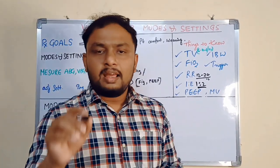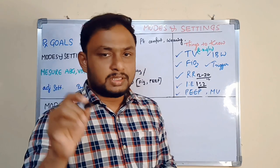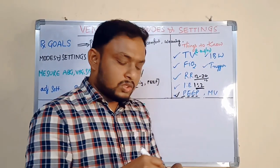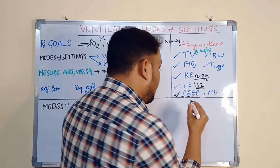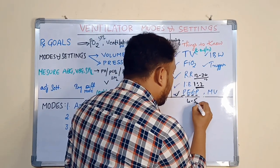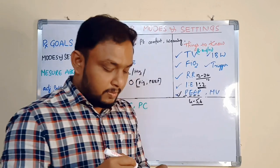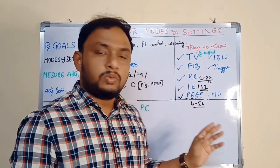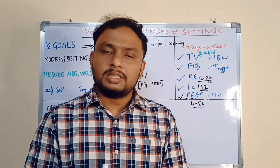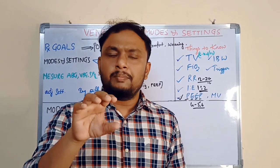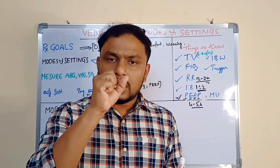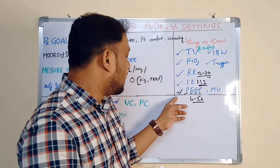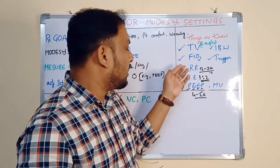PEEP — positive end-expiratory pressure. What is PEEP? Usually you will keep 4 to 5, or 6 also you can keep — 4 to 6. This positive end-expiratory pressure, this PEEP, maintains the alveoli — it prevents the alveoli from closing completely. It opens the alveoli. That is the use of PEEP.